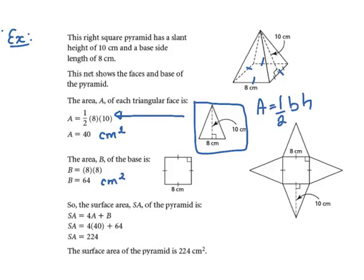To find the surface area of the entire shape, we add the triangles and the base. Since there are four triangles, we multiply the triangle area by four and add the base: 4 times 40 plus 64 equals 224 centimeters squared. That is the surface area of the entire shape.